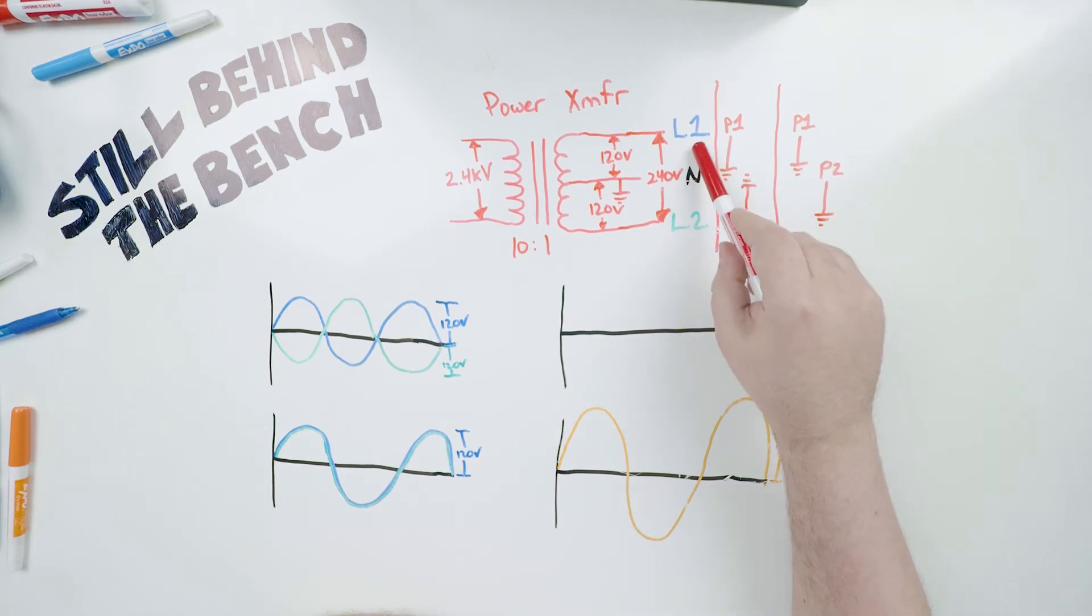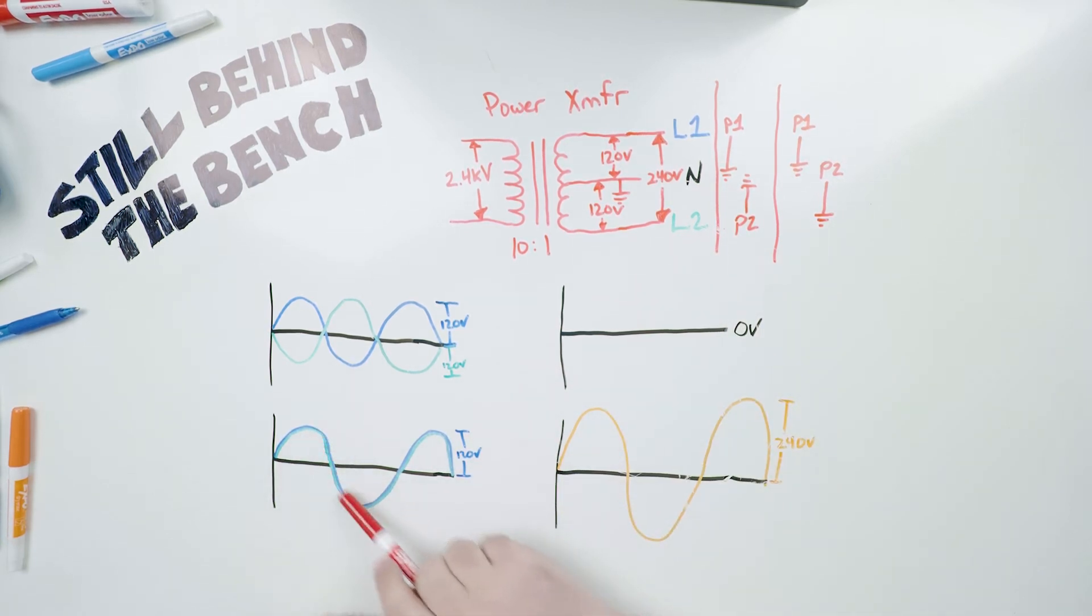When you do it this way, you get this waveform. Two sine waves overlapping each other. And when you sum it, you get the expected answer. The sum of the two. 240 volts. Now, I've made up a quick little example. I don't have an oscilloscope, but I can do this with DC AA batteries. So I've got two multimeters here.